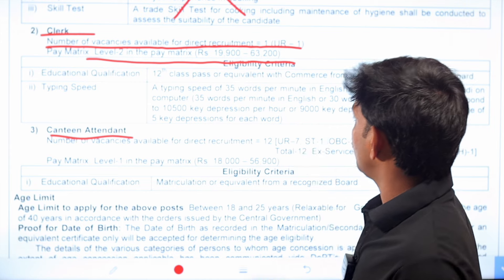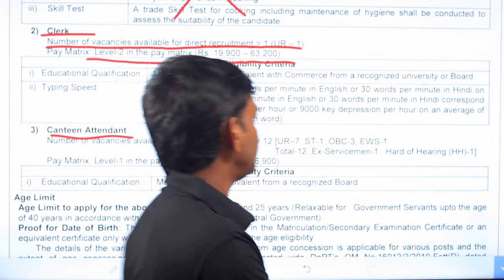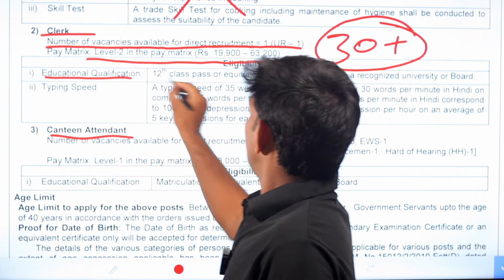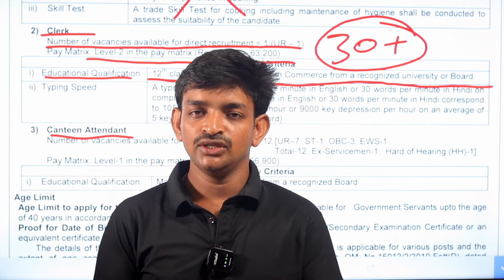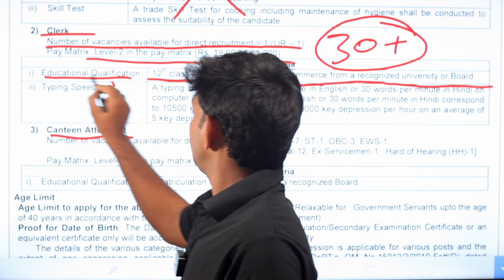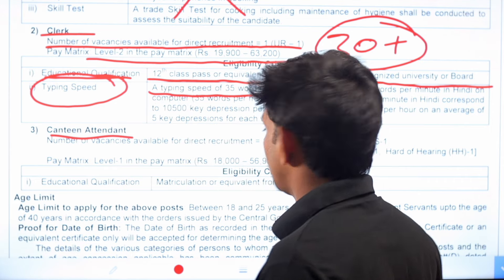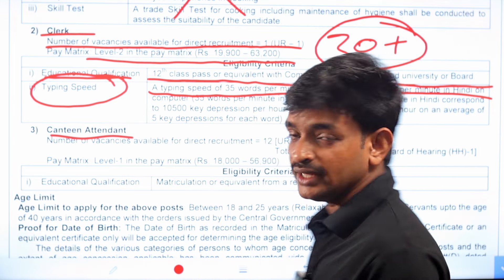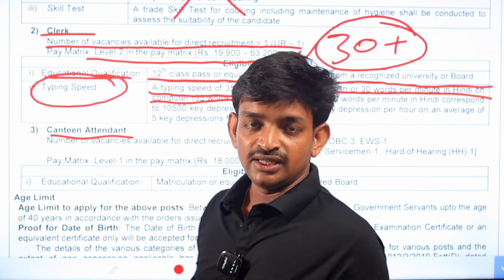The maximum pay is higher than the maximum for Level 2. With all other allowances, the in-hand salary from the Government of India would be higher than 30,000. For education qualification, your 12th pass or equivalent with Commerce from a recognized university or board is required — that is, Intermediate pass. For Clerk jobs, typing speed is a must. If you type in English or Hindi, you need to meet the required typing speed, whether on a computer or typewriter.